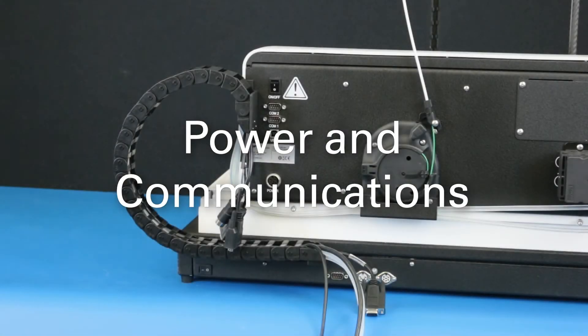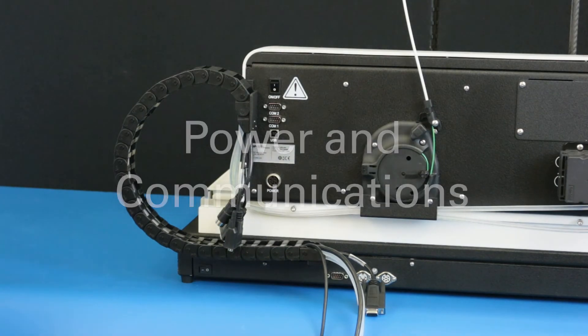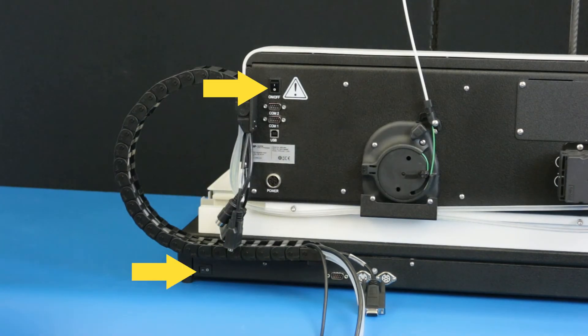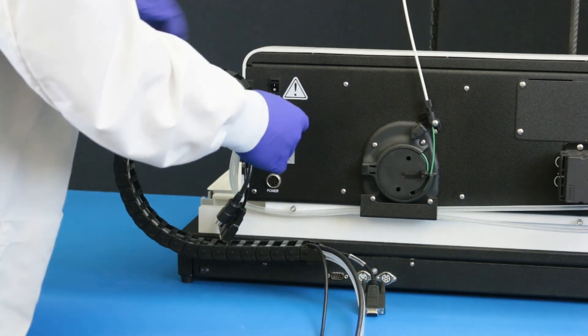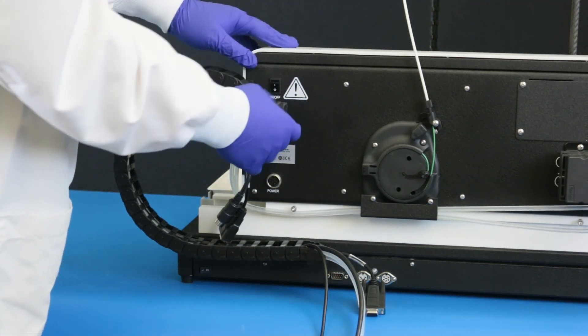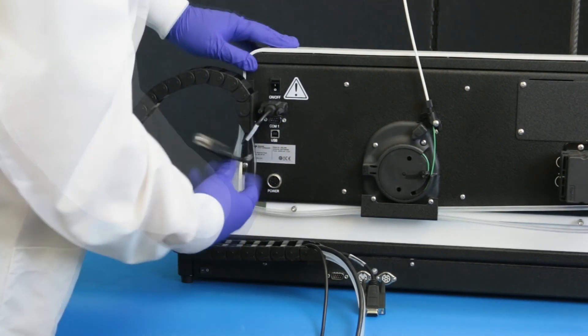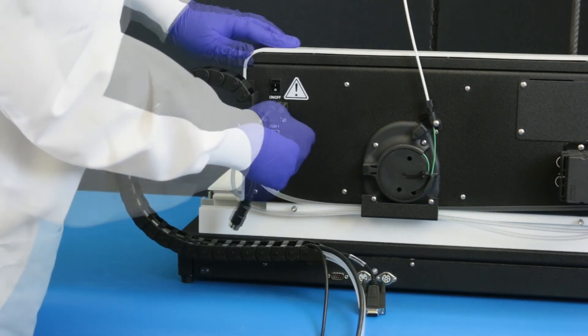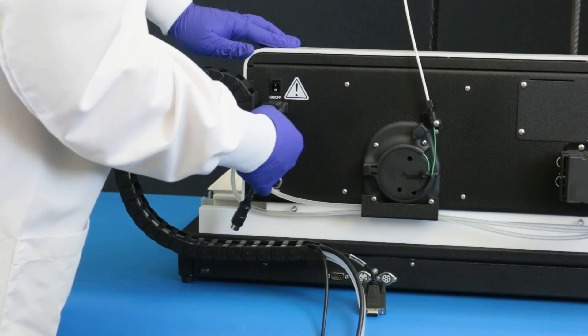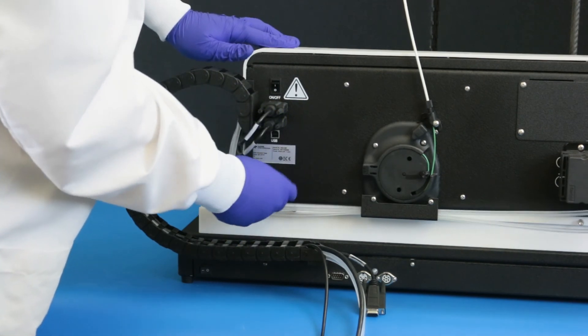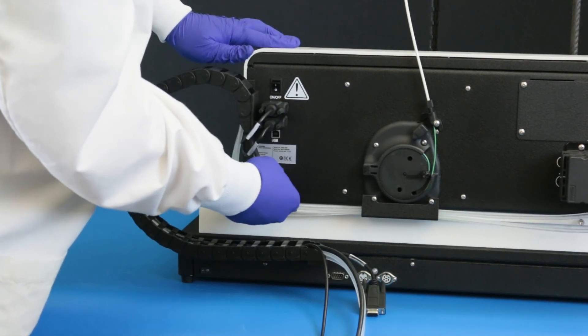Power and communications. Check that both power switches are turned off. Connect the two serial cables located in the chain to the Auto Sampler head. Connect the power cable to the connector on the Auto Sampler head.